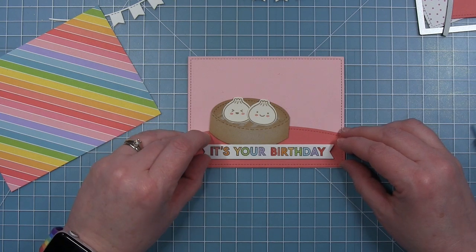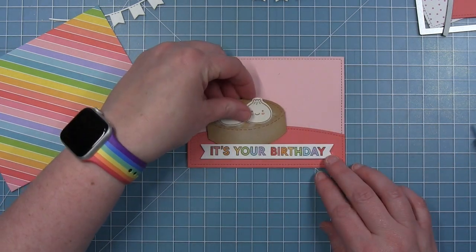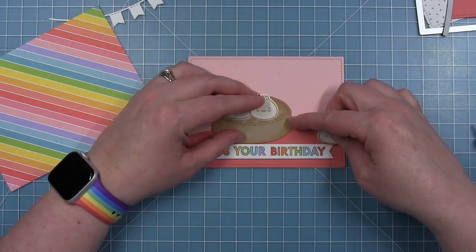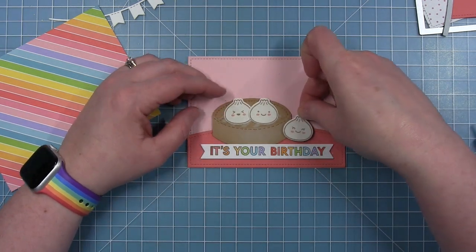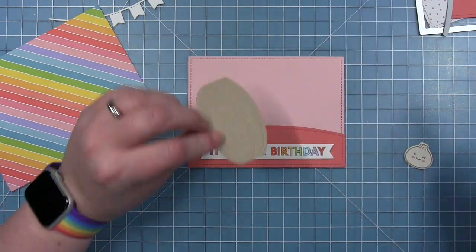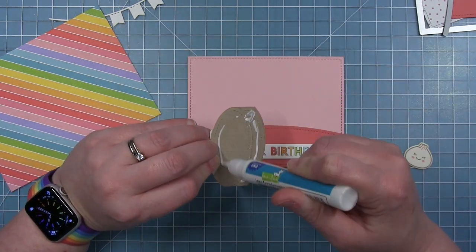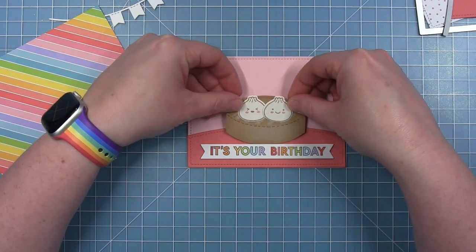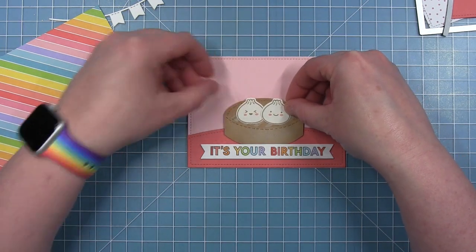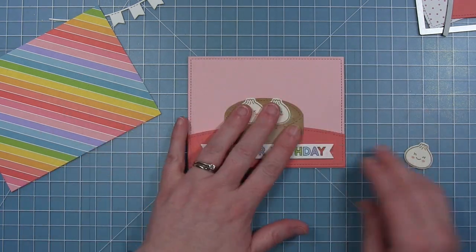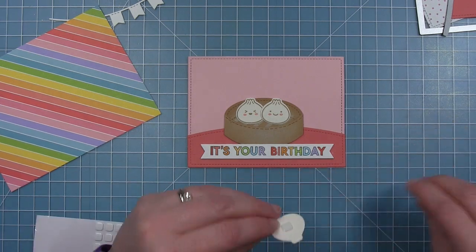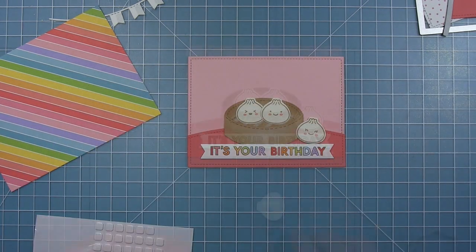I'm adding my sentiment banner with some thin foam squares. This is where I decided I wanted to shift my basket over and be centered and have four steam buns on my final design. I'm adding this with some liquid glue to the center, then I'll add my other little steam buns, one to each side using a foam square so they are popped up.